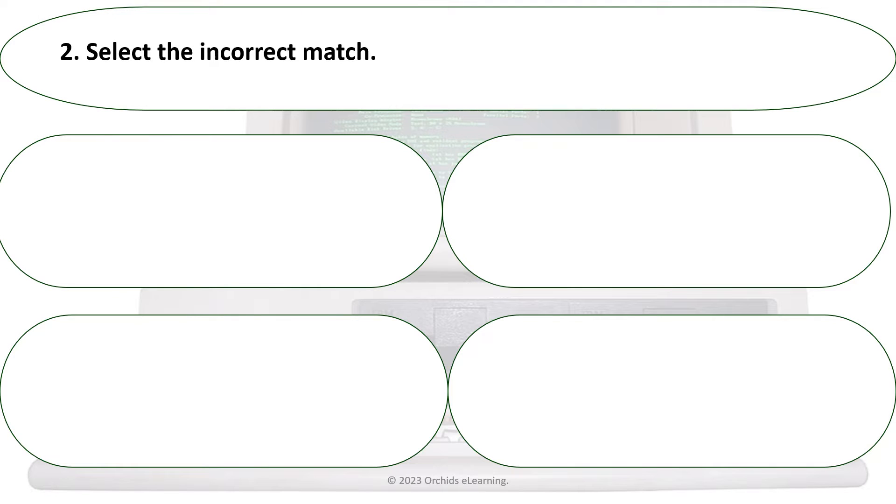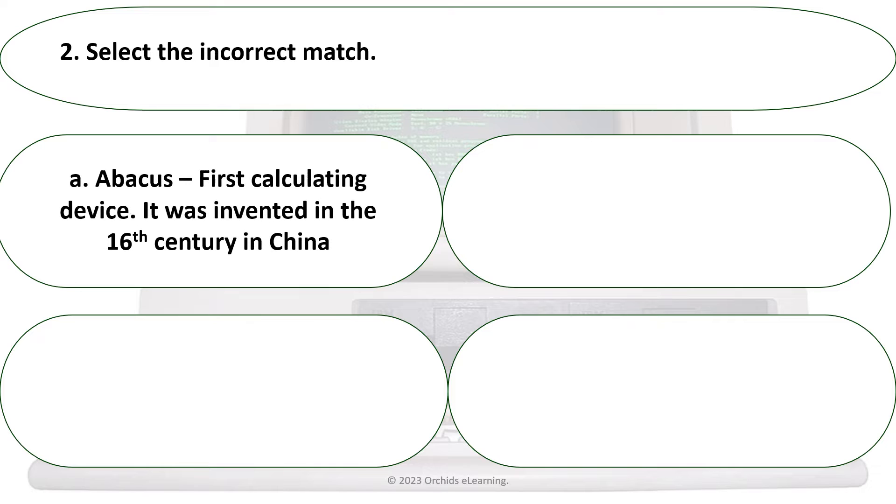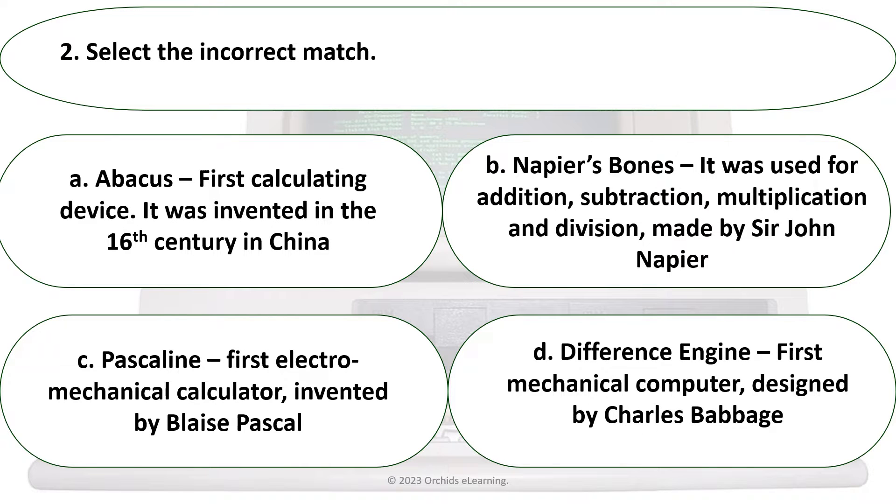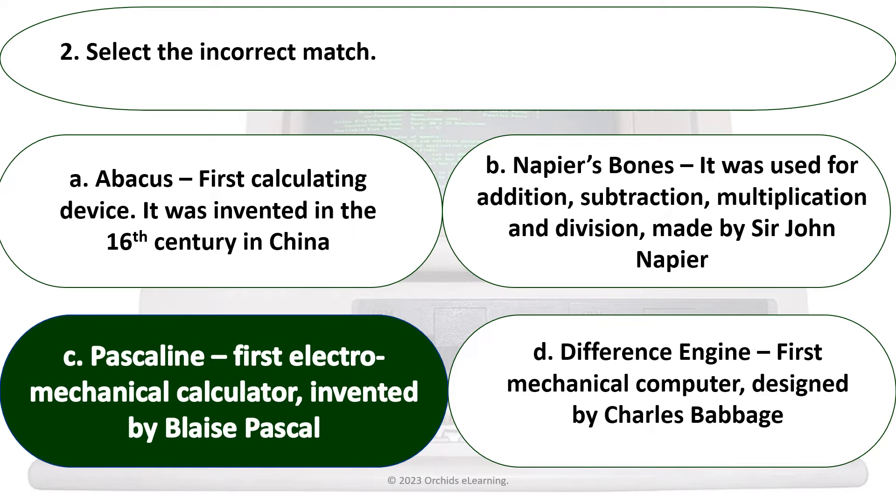Select the incorrect match: C. Pascaline - first electromechanical calculator invented by Blaise Pascal